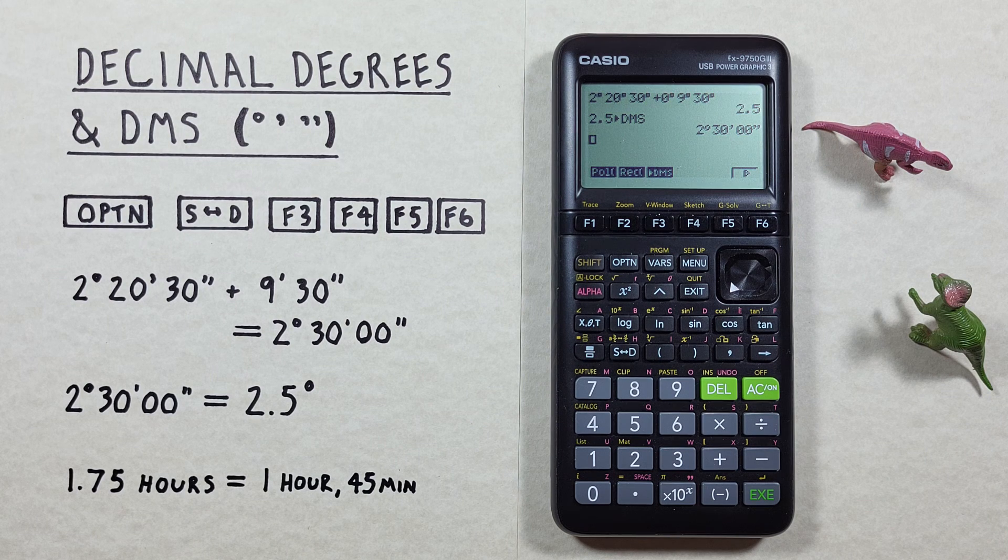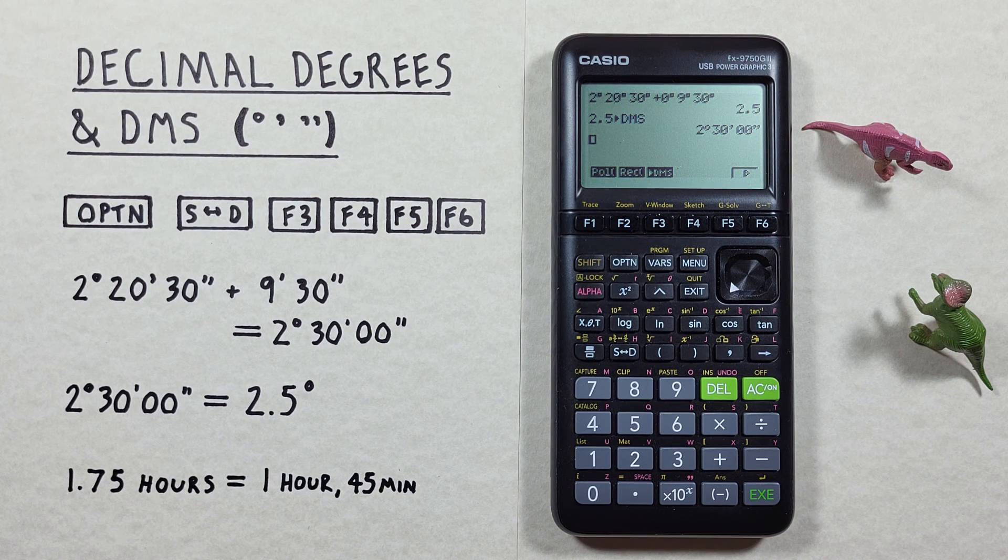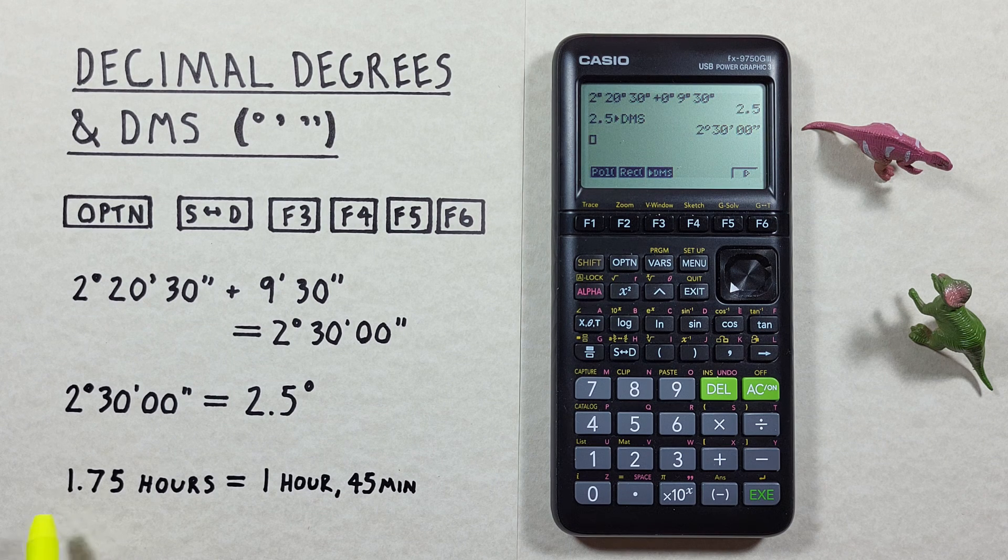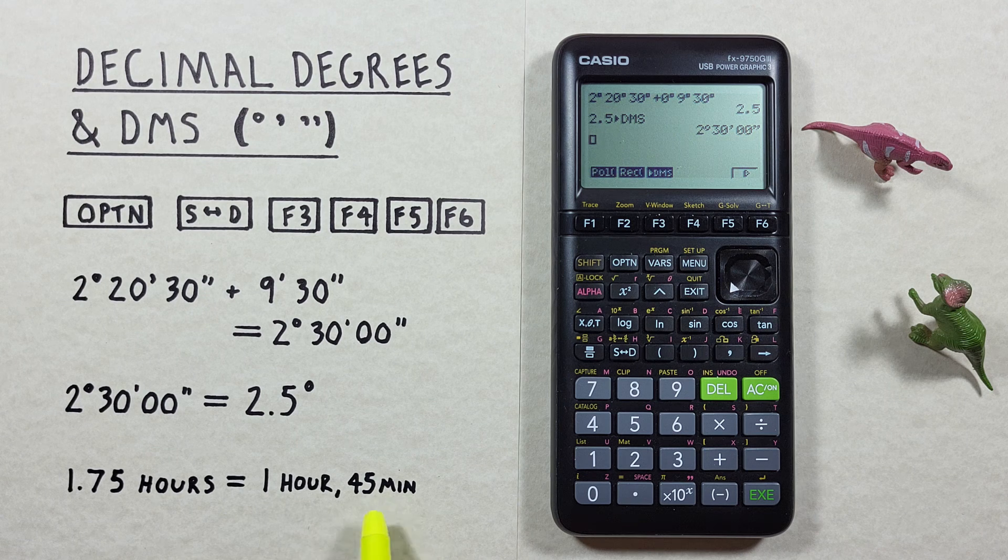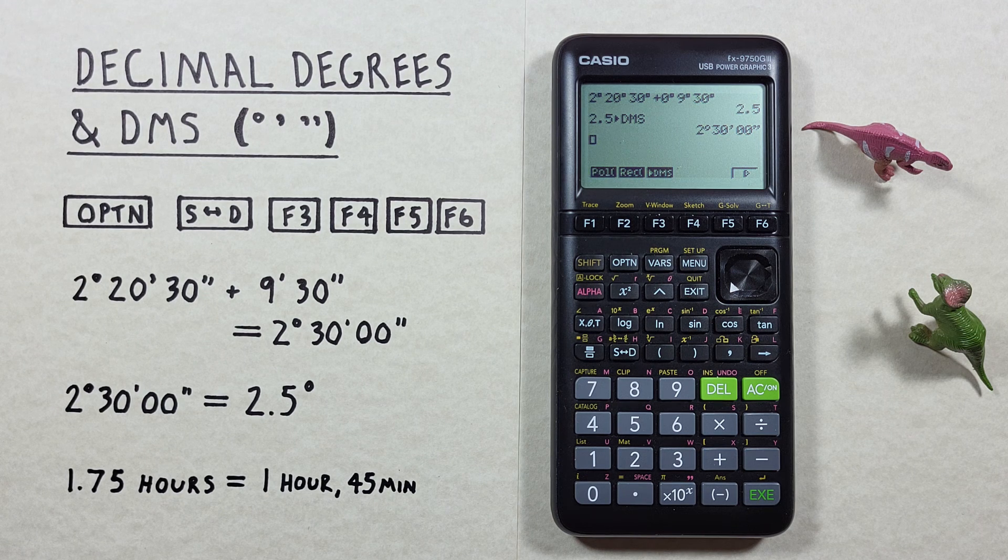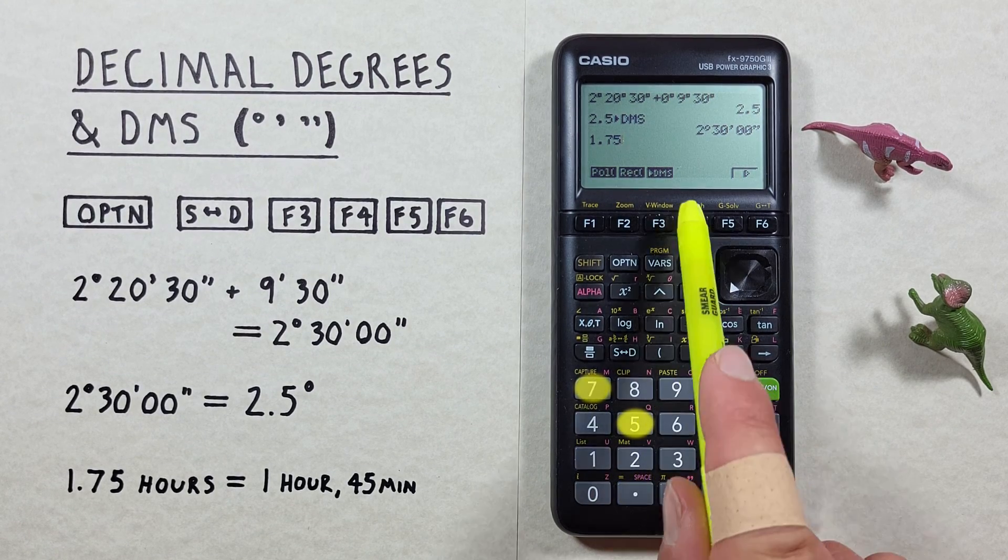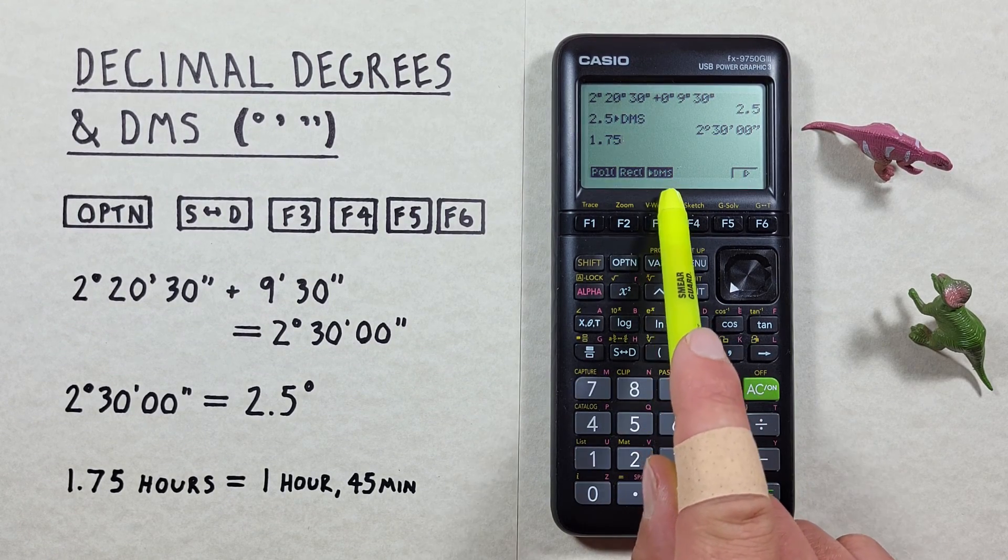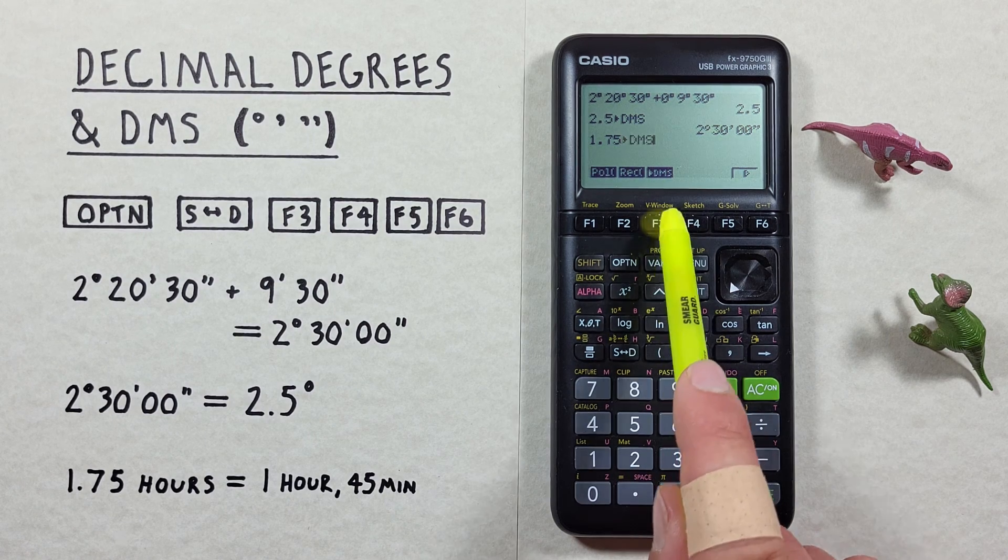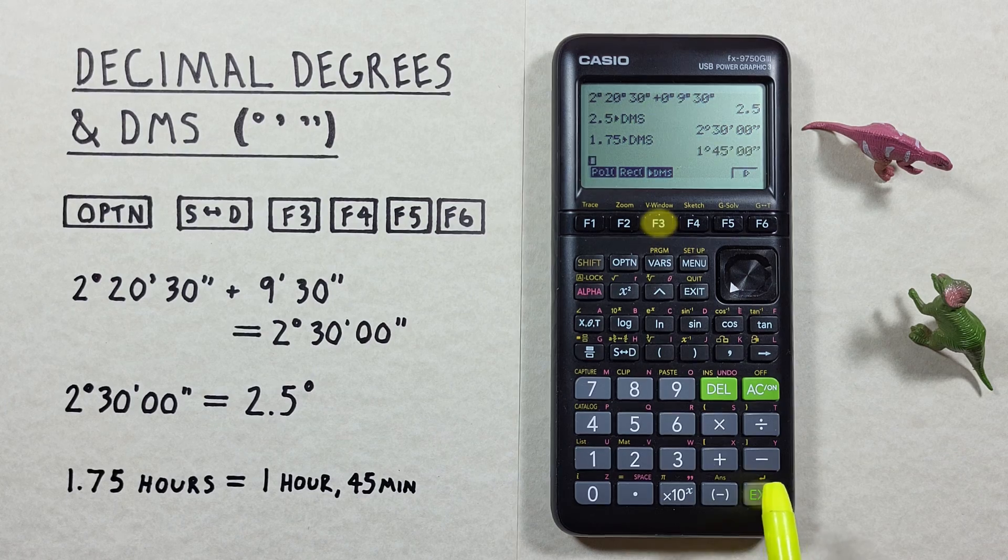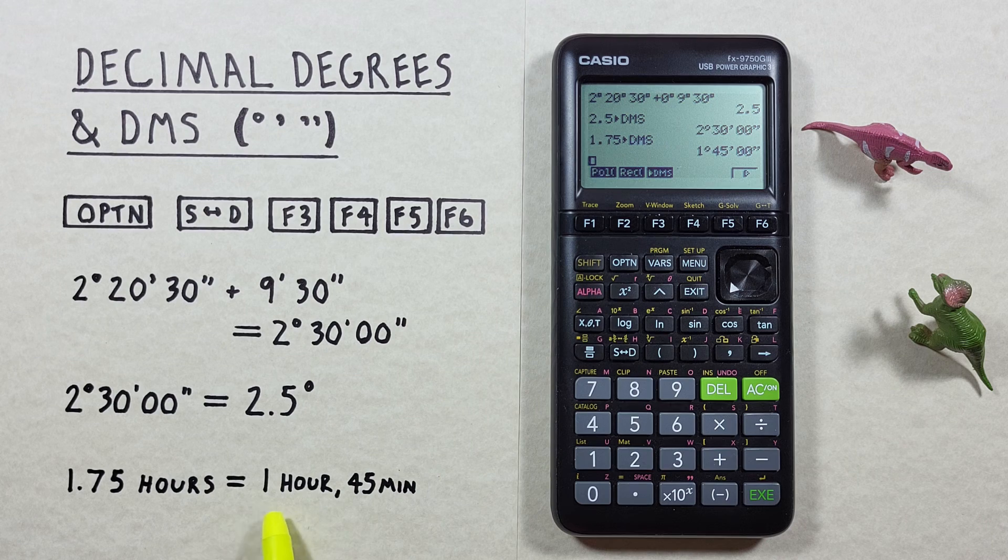We can also use this one working with time since both degrees and hours have 60 minutes in them. For example let's say we were given 1.75 hours and wanted to know how many hours and minutes that was. Well we can just enter that 1.75 and tell our calculator to convert that to degrees minute seconds or in this case hours minute seconds. Hit exe and see we get 1 hour 45 minutes which is correct.